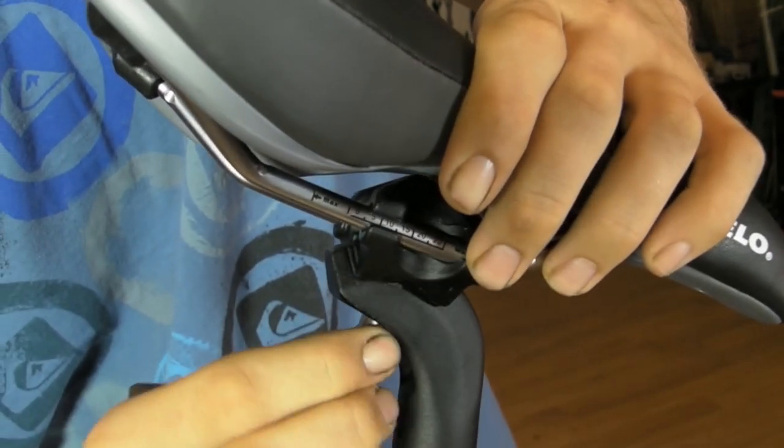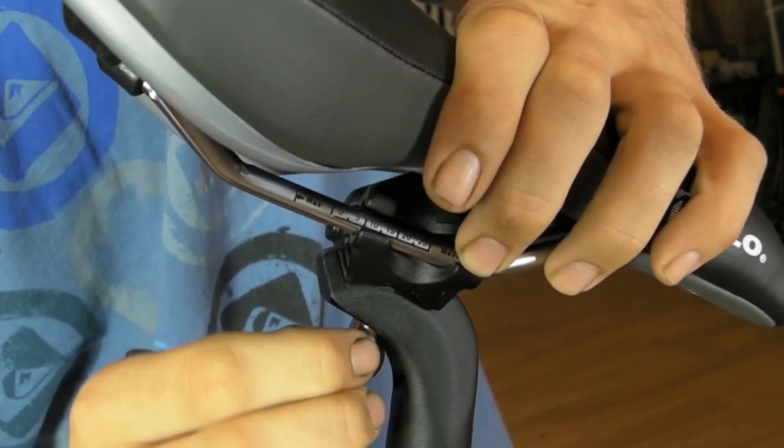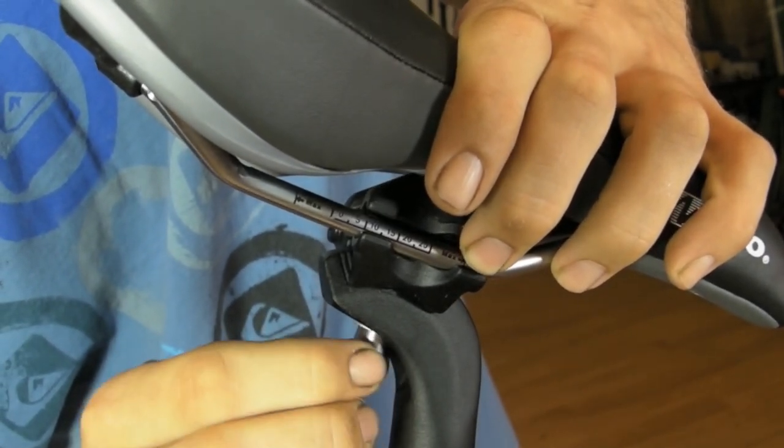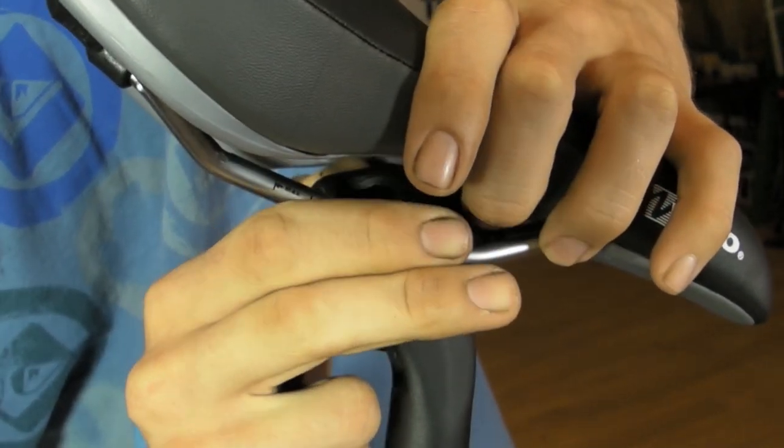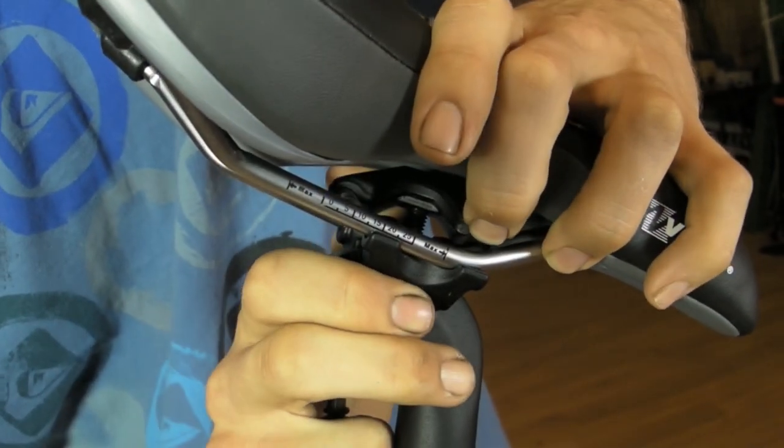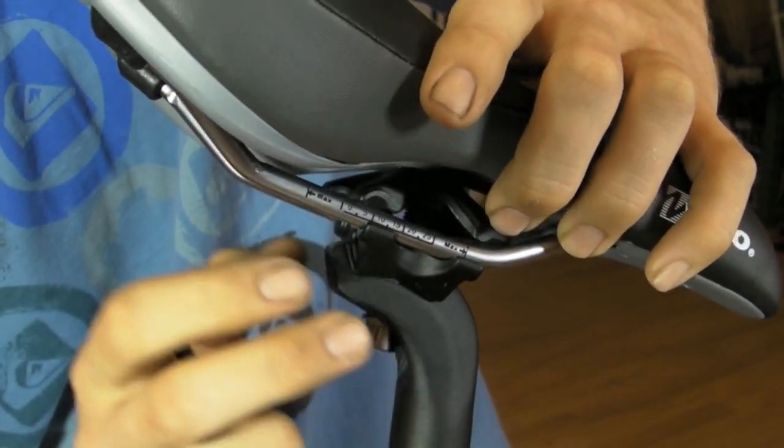But for this, we're going to show you how to take the actual seat or saddle off of the whole seat post assembly. So loosen your bolt, not all the way to where it comes out, but just enough where you can take this top platform and spin it. A couple more turns, just like so.